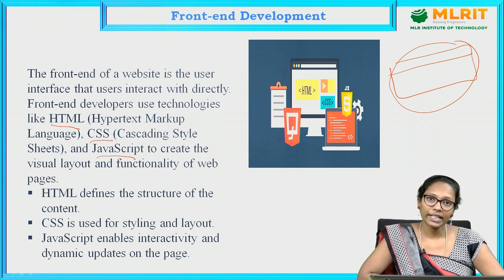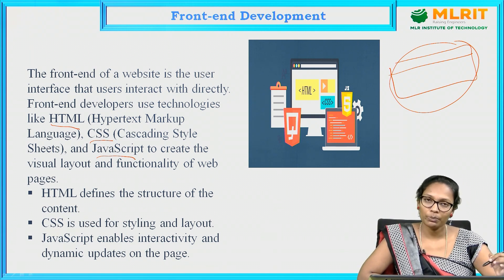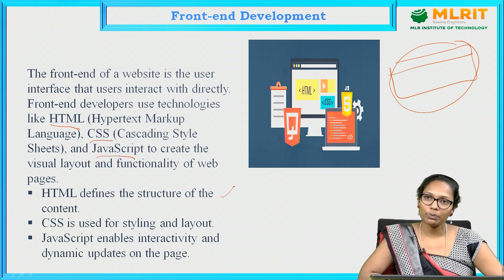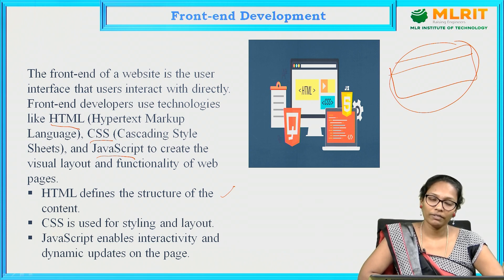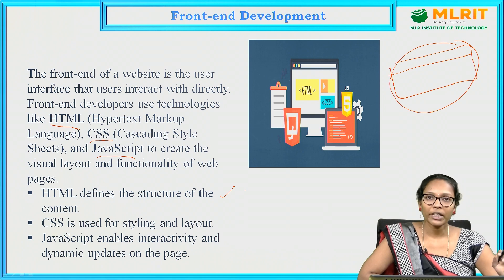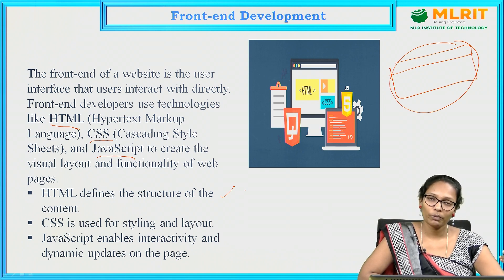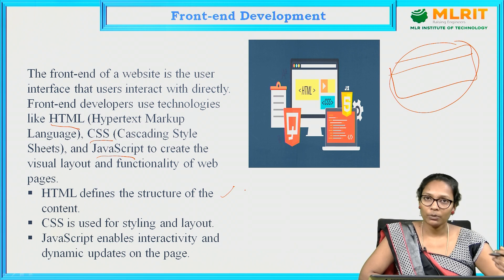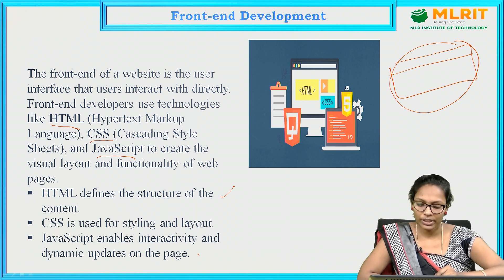To develop or design the front end part we use HTML, CSS, and JavaScript. For any type of web page we mainly use these three technologies. HTML, which stands for HyperText Markup Language, provides a basic structure for your web page. The interactive or dynamic feature can be added using JavaScript.